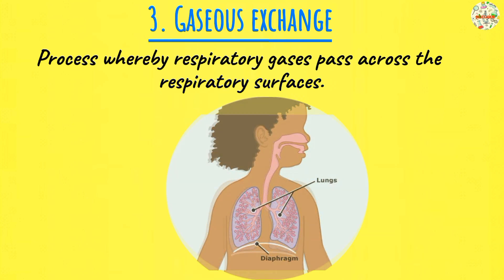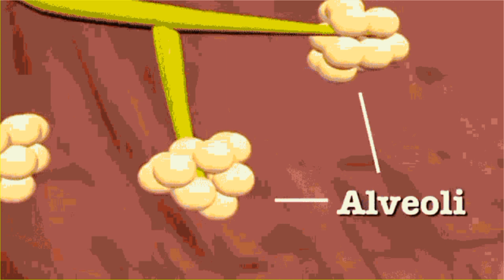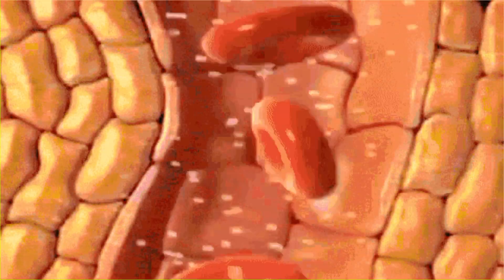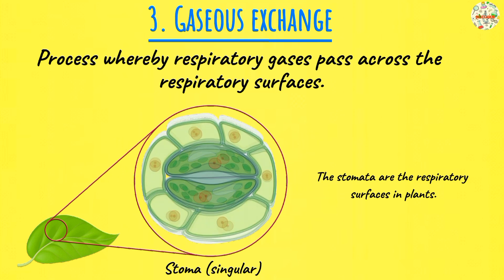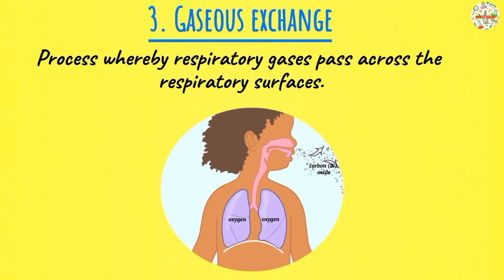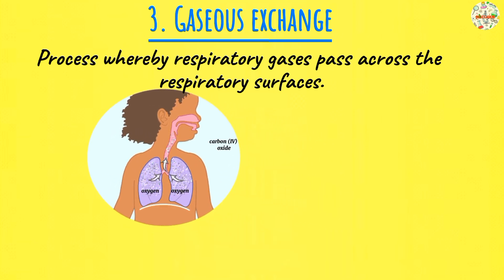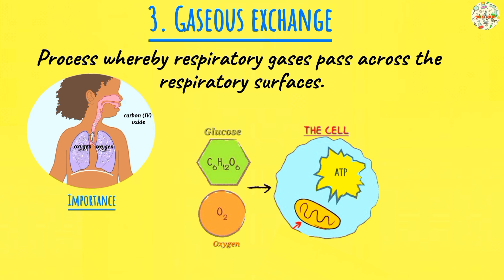For example, in an animal's body, specifically in humans, our respiratory surfaces are the alveoli — the air sacs that are found within our lungs. So across the membrane of the alveoli is where oxygen and carbon dioxide are exchanged. We require oxygen in order for respiration to take place. Therefore, without oxygen, respiration cannot happen and we cannot obtain energy. So oxygen is necessary, and we obtain it through gaseous exchange.